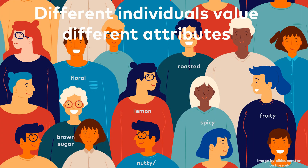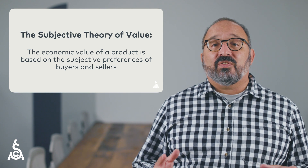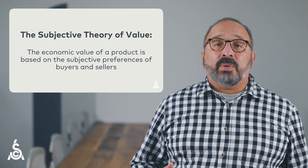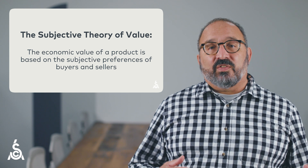So let's talk about how value is related to the attributes we explored in the previous video. To begin with, we must recognize that different individuals — whether coffee producers, tasters, or consumers — will value different attributes differently. Individuals have different needs and expectations, especially in their food and drink. The economic value of a product is based on the subjective preferences of buyers and sellers. This concept is known by economists as the subjective theory of value, and it is the dominant theory in modern economics because it explains how goods and services are valued differently across individuals and cultures.